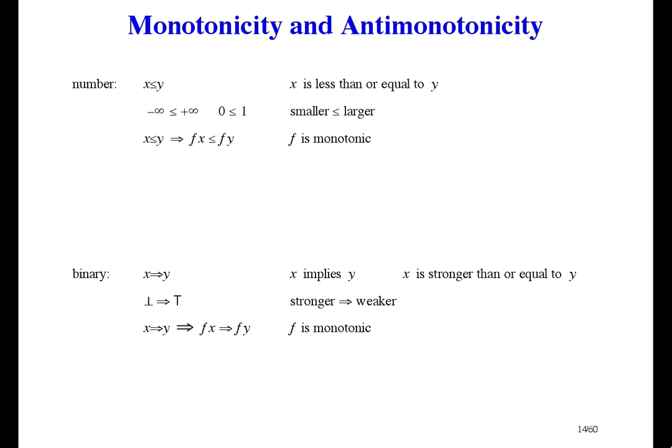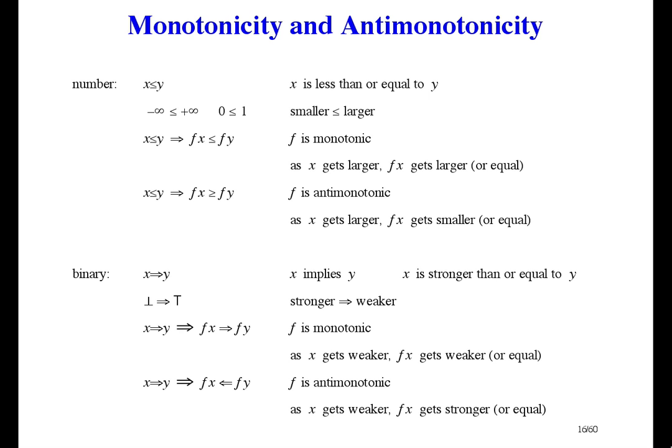We've seen monotonic for numbers, so for binary values we just replace less than or equal to with stronger than or equal to. For numbers we say that as x gets larger, f of x gets larger or stays the same. So for binary values we say as x gets weaker, f of x gets weaker or stays the same. Or I could say it the other way around: as x gets smaller or stronger, f of x gets smaller or stronger. The point is that as x goes one way, f of x goes the same way. And then anti-monotonic is just the other way around. As x goes one way, f of x goes the other way.